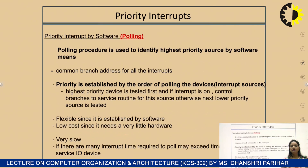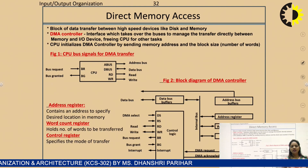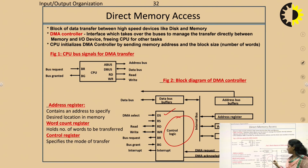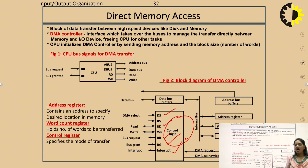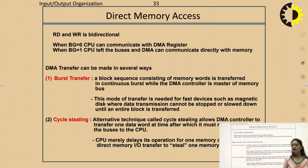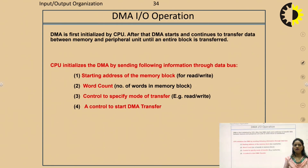DMA — direct memory access — uses a DMA controller chip, which works on behalf of the CPU to transmit data between main memory and input-output devices without CPU intervention. Since the CPU is a very fast and busy device, it is not always possible to involve the CPU in every data transfer between memory and input-output devices. To increase CPU efficiency, a DMA controller chip is used in place of the CPU to control this transmission.